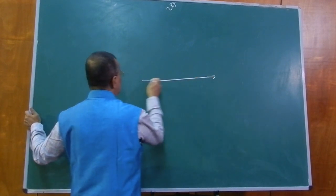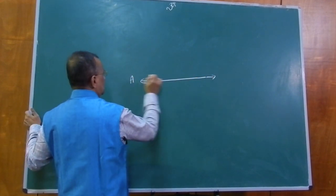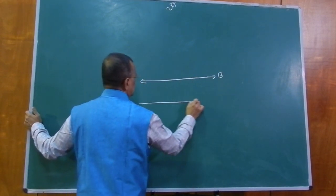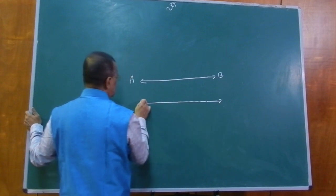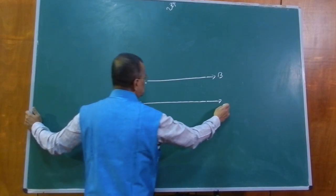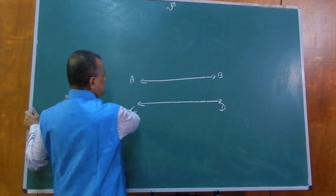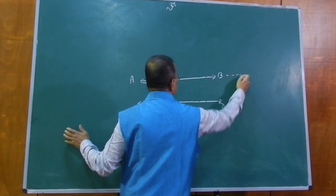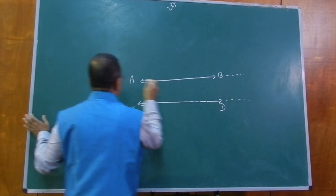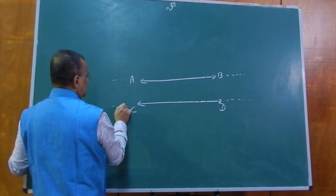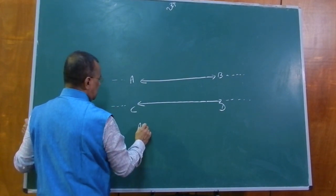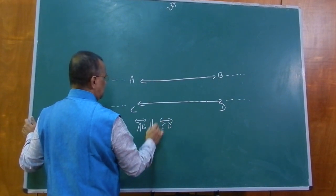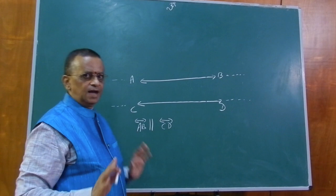Here is one straight line. Now I am drawing another straight line, that is CD. These two straight lines will never meet, even if they are produced on either side. Therefore, we call AB and CD as two parallel lines.